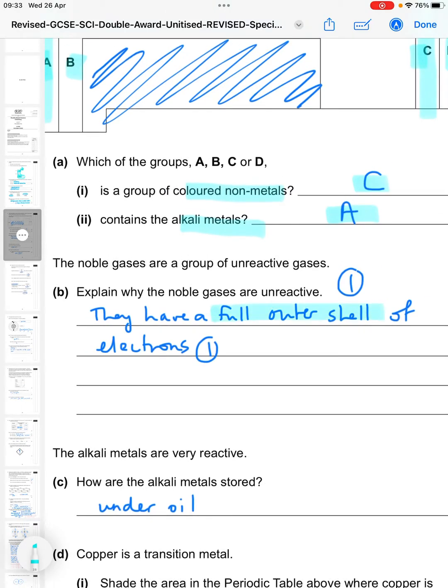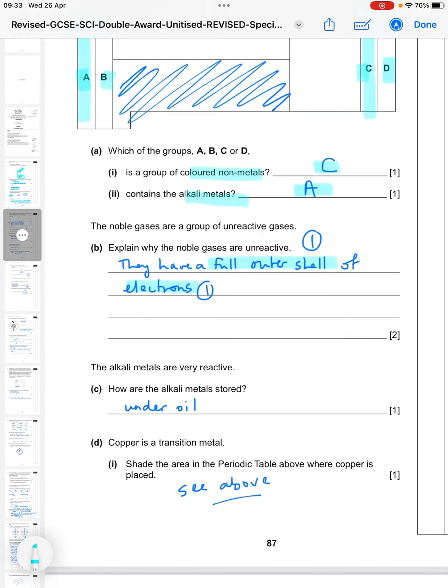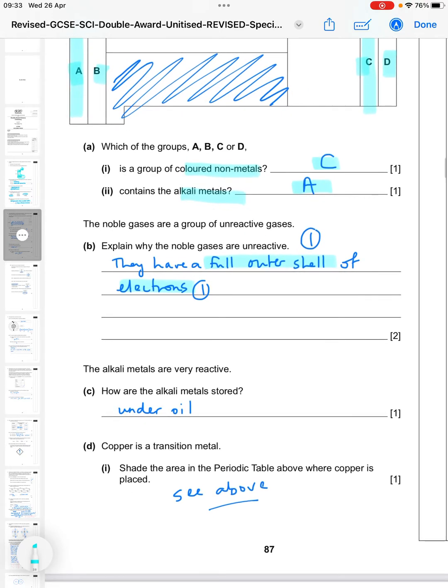So any explanation about the noble gases, you're going to have to say they have a full outer shell of electrons. So one mark for the full outer shell and one mark for saying that that is of electrons. Part C, the alkali metals are very reactive. How are the alkali metals stored? You have to say something about they're stored in oil, or the term we would use in chemistry is under oil.